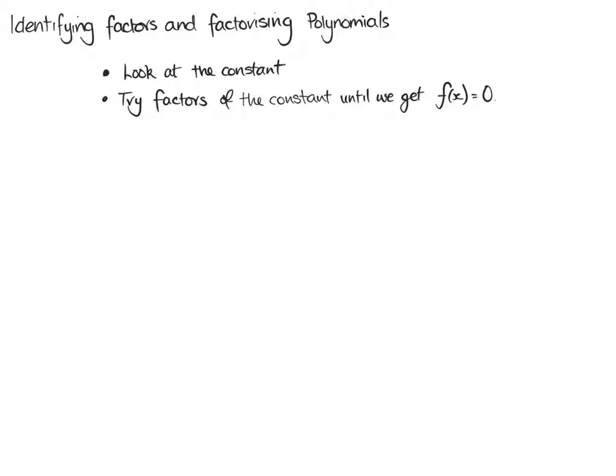And then we try factors of the constant until we get the f of x equals 0. That's all it is, and then we're using synthetic division as we did before.